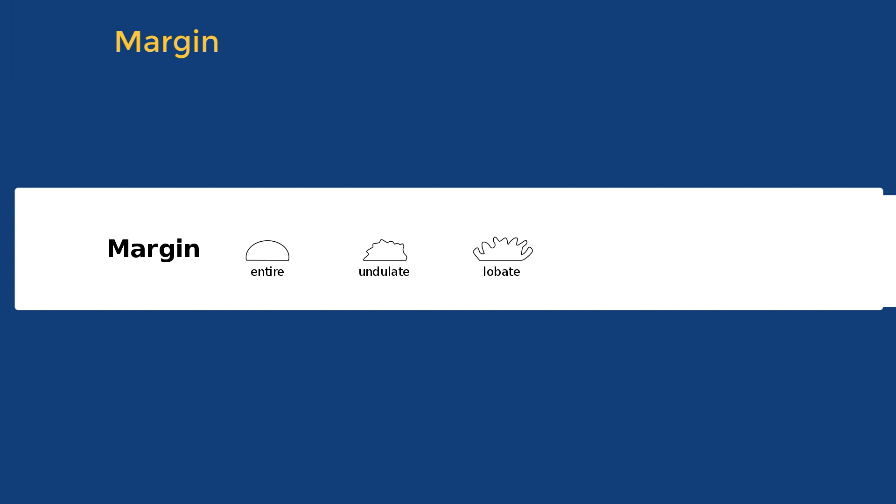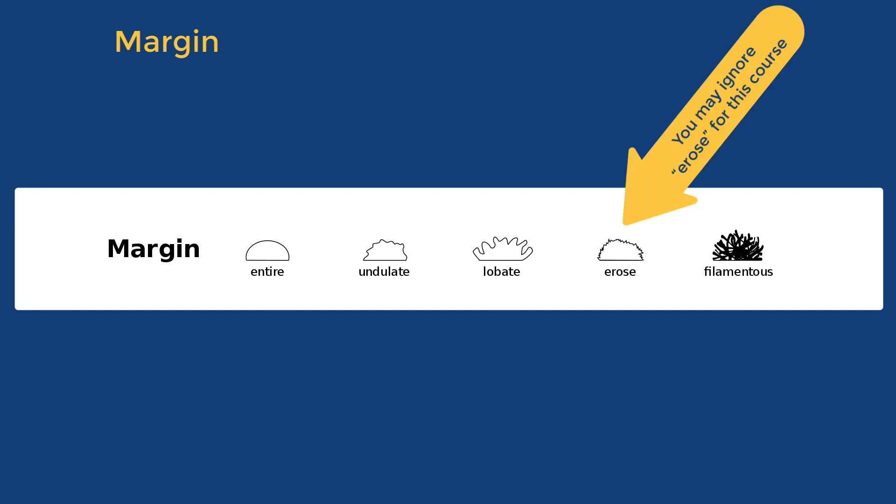If the waves are very pronounced, we call it lobate. And then for colonies that have a filamentous shape, we cannot really describe the margin. So we just say filamentous.